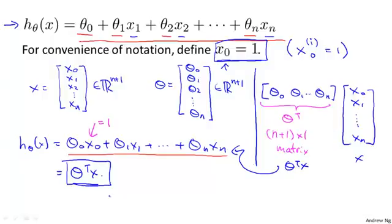So that's the form of our hypothesis when we have multiple features. And just to give this another name, this is also called multivariate linear regression. And the term multivariate is just maybe a fancy term for saying that we have multiple features or multiple variables with which to try to predict the value y.